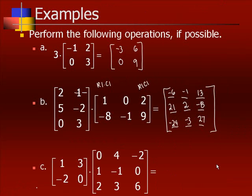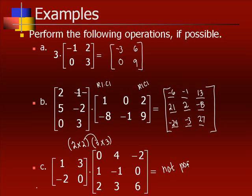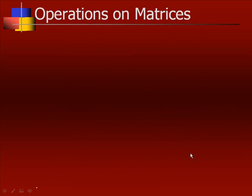Clearing the screen for a new problem. To multiply the next one — a 2 by 2 matrix and a 3 by 3 matrix — the two inside numbers don't match up, so this one is not possible to multiply.